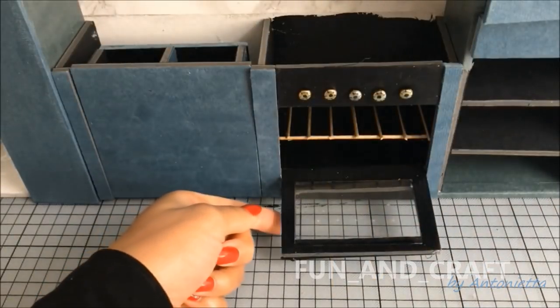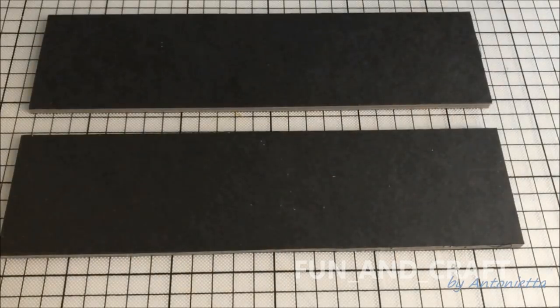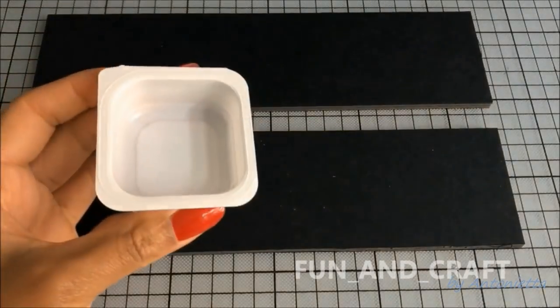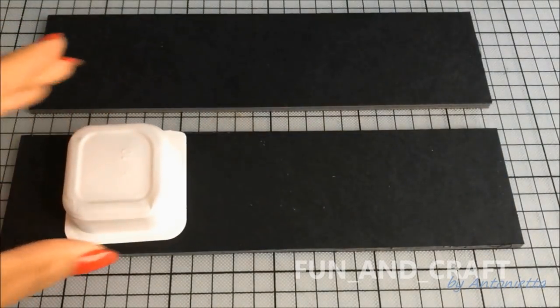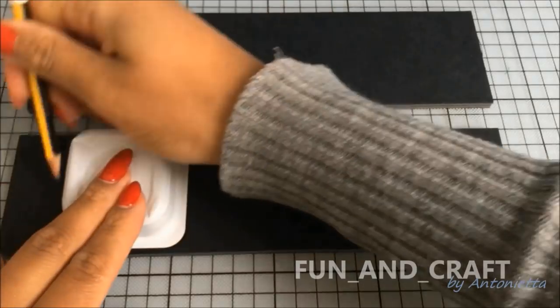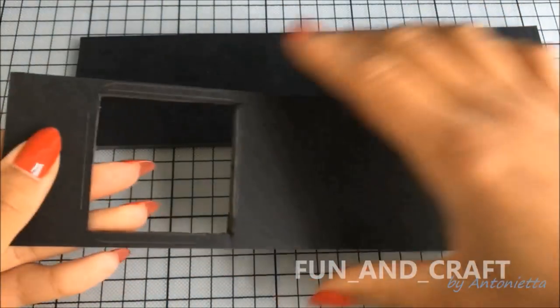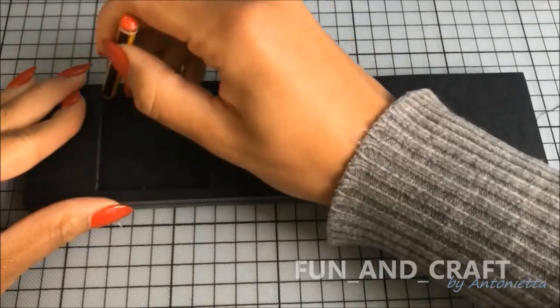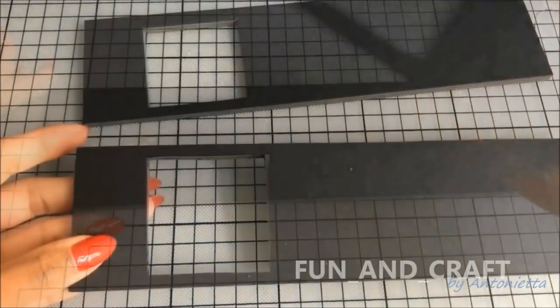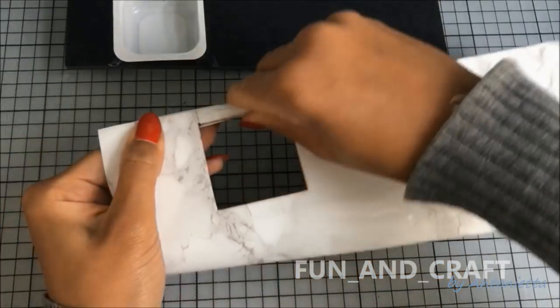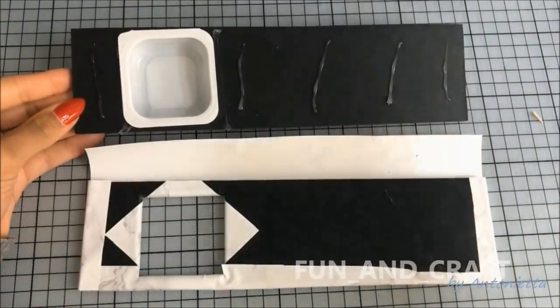For the kitchen counter you will need two pieces of foam board that are 25 centimeters long and six centimeters wide. Trace the shape of a small white container on one of them and cut it out inside the line so that the opening is slightly smaller than the container. Cut the same hole into the other foam board.